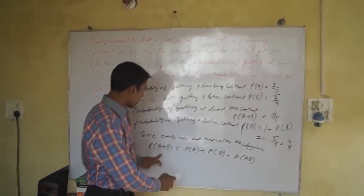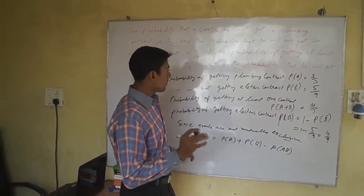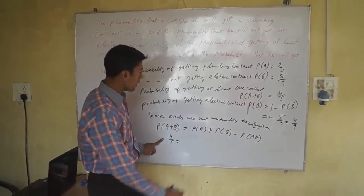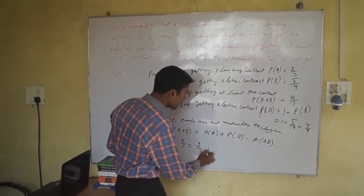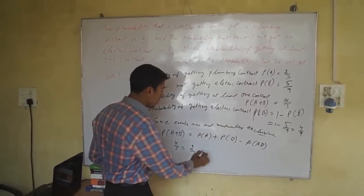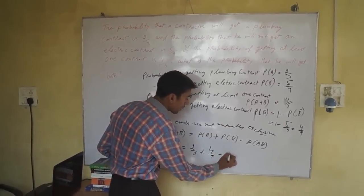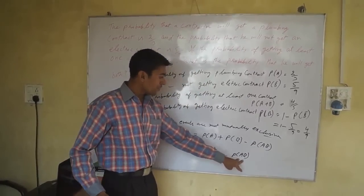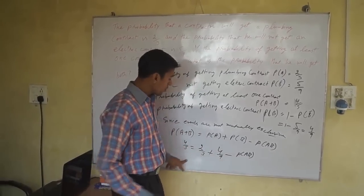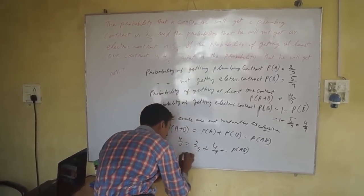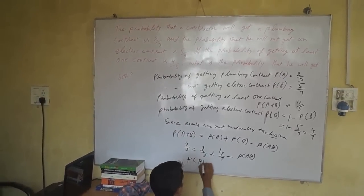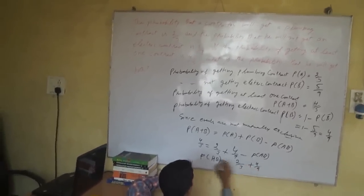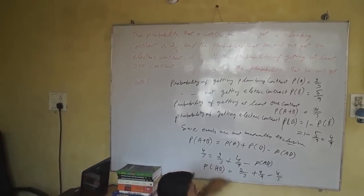The probability of at least one contract is 4/5. P(A) is 2/3 and P(B) is 4/9. We rearrange to find P(A∩B): P(A∩B) = P(A) + P(B) - P(A∪B) = 2/3 + 4/9 - 4/5.